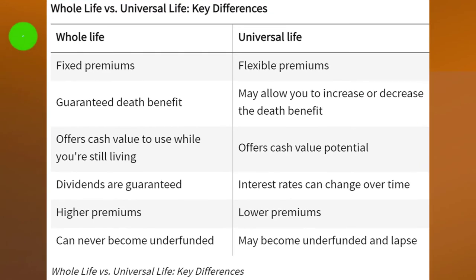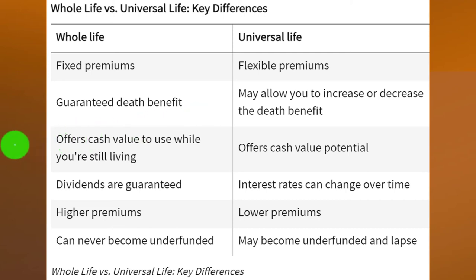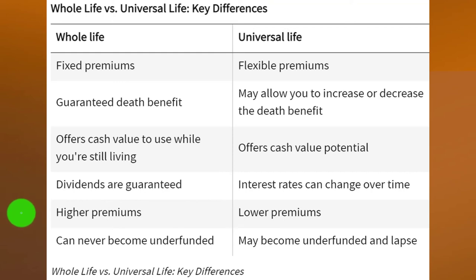Comparing whole life versus universal life: whole life has fixed premiums while universal life has flexible premiums. Whole life has guaranteed death benefits; universal life may allow you to increase or decrease the death benefits. Whole life offers cash value to use while you're still living; universal life offers cash value potential. With whole life, dividends are guaranteed; with universal life, interest rates can change over time. Whole life has higher premiums; universal life has lower premiums. Whole life can never become underfunded, while universal life may become underfunded and lapse.